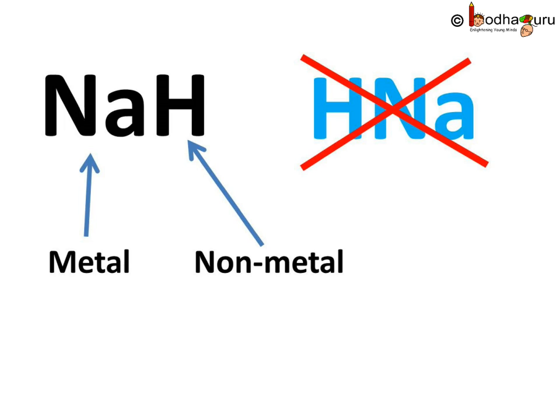You may wonder, why do we write NaH and not HNa? What is the difference? Well, while writing a chemical formula, the metallic element is kept first. Sodium is a metal but hydrogen is a non-metal. So, we write NaH, not HNa.